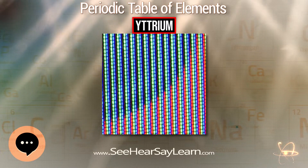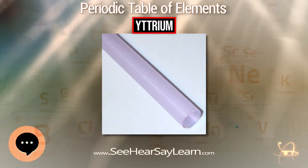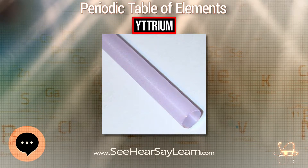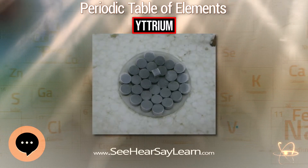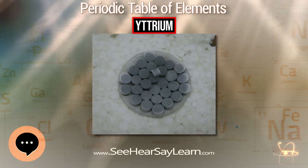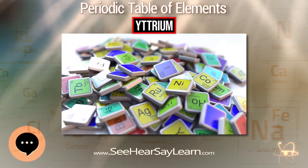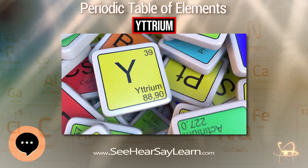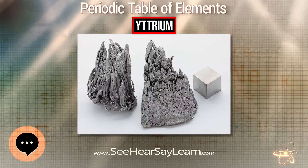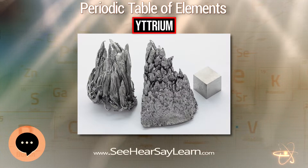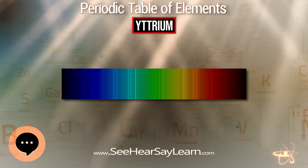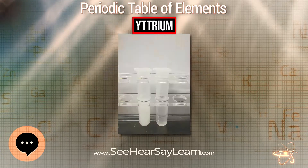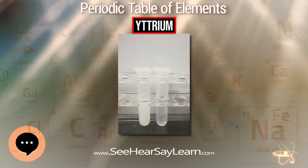Yttrium can be used to deoxidize vanadium and other non-ferrous metals. Yttria stabilizes the cubic form of zirconia in jewelry. Yttrium has been studied as a nodulizer in ductile cast iron, forming graphite into compact nodules instead of flakes to increase ductility and fatigue resistance. Having a high melting point, yttrium oxide is used in some ceramics and glass to impart shock resistance and low thermal expansion properties — making such glass useful in camera lenses.